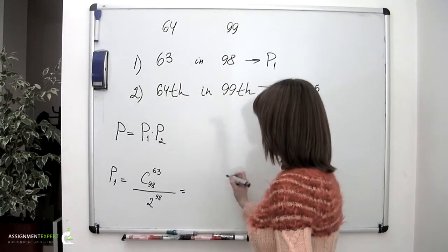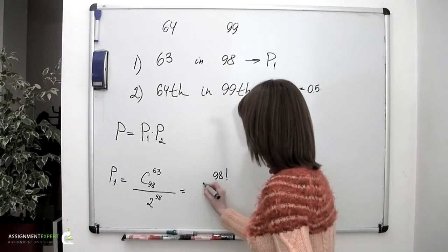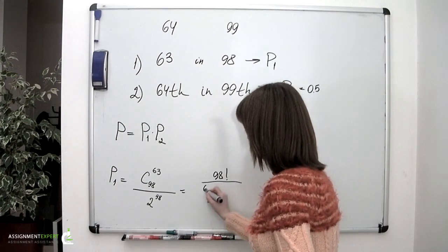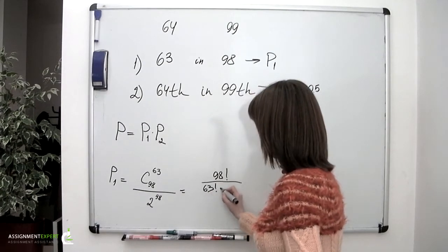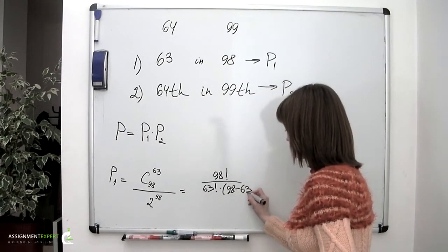So we have 98 factorial over 63 factorial times 98 minus 63 factorial.